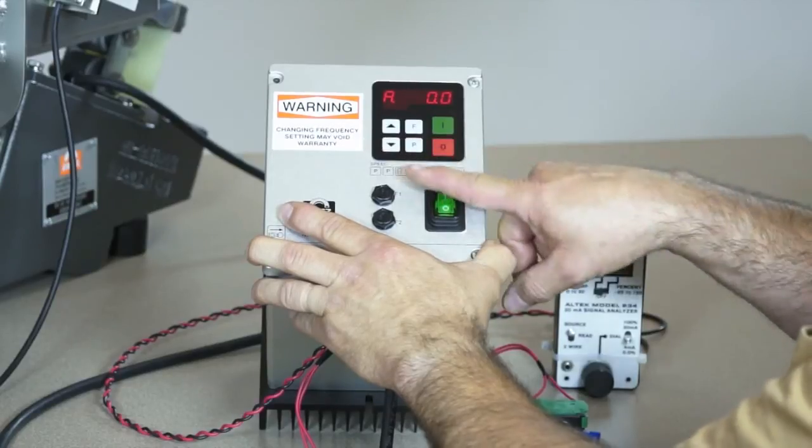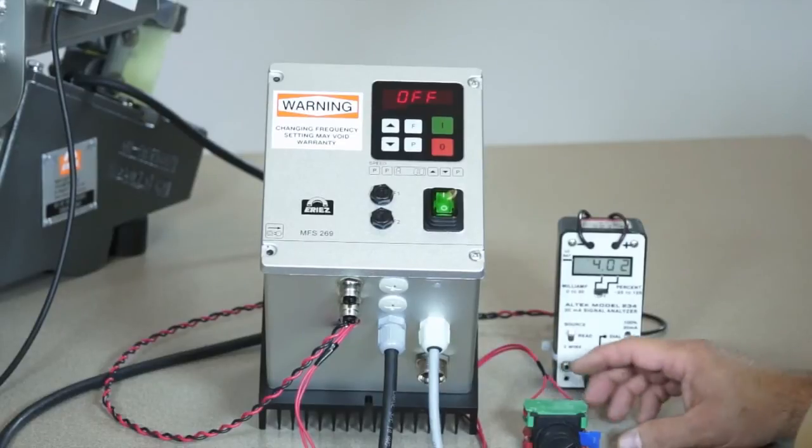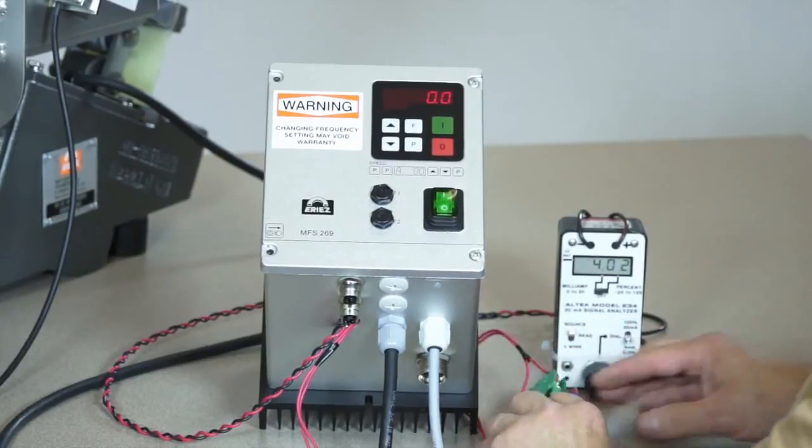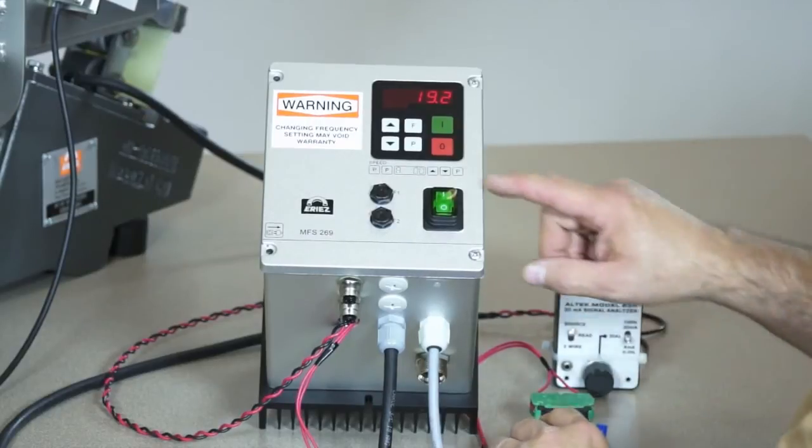Press the green I button and the display will read OFF. Now the feeder can be started remotely and controlled by the 4 to 20 milliamp source. The bias, or minimum feeder displacement level, can be raised by increasing the amplitude A in code 000.